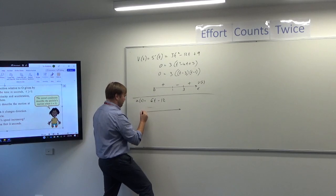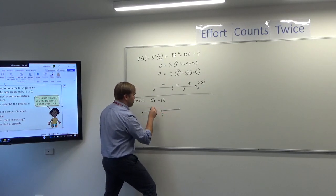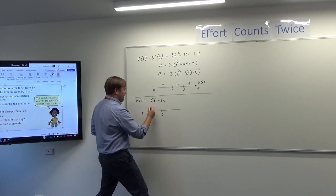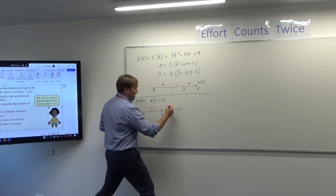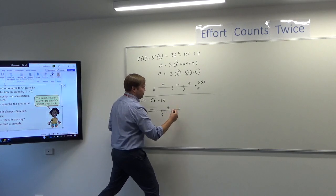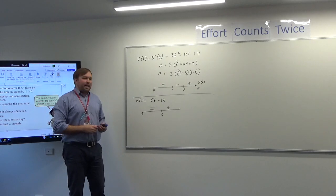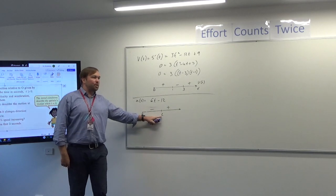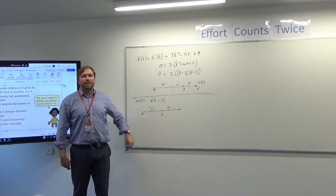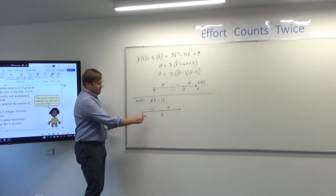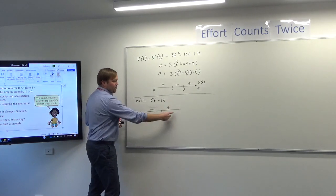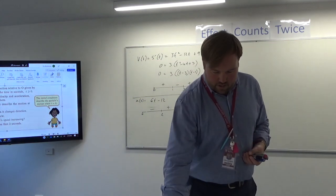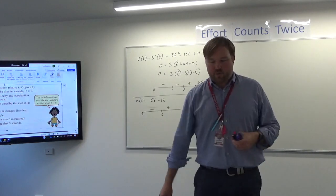The sign diagram for acceleration: a(t) = 0 gives t = 2. Putting t = 1 in gives a negative value; putting t = 3 in gives a positive. So the particle is accelerating to the left before t = 2, then starts accelerating to the right. What that means is the velocity will be slowing down and then increasing — something to watch for as well.